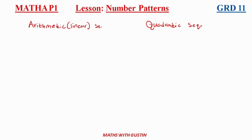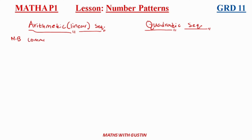The purpose of this lesson is to show you what is important in this chapter so you don't struggle. If you watch until the end, I don't think you'll struggle at all. The arithmetic sequence, also known as linear, is identified by having a constant difference.